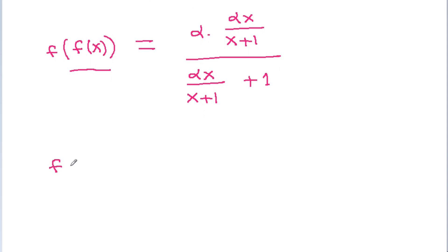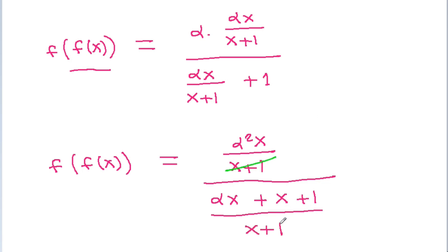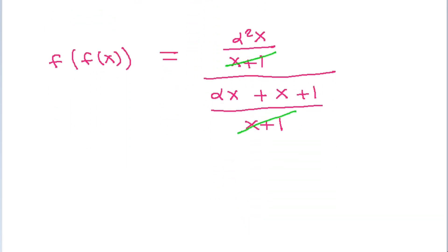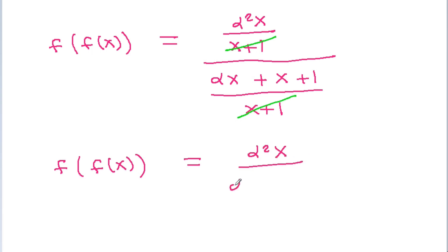And f of f(x) will be equal to alpha squared x by x plus 1, divided by alpha x plus x plus 1 by x plus 1. And f of f(x) will simplify to alpha squared x by alpha x plus x plus 1.